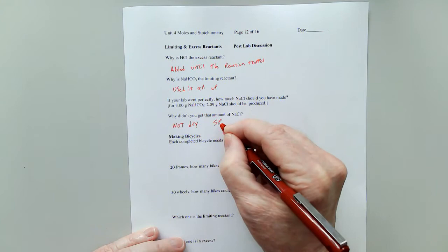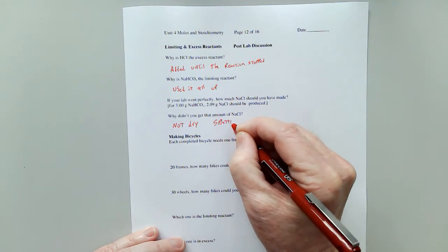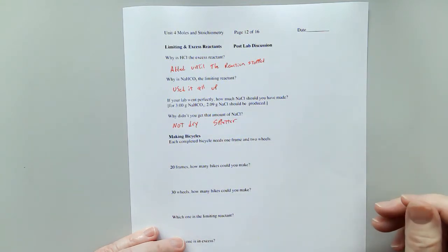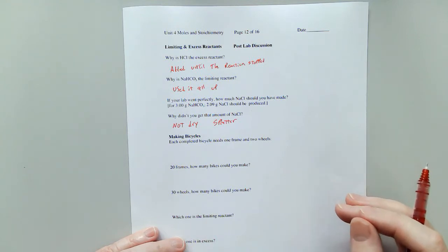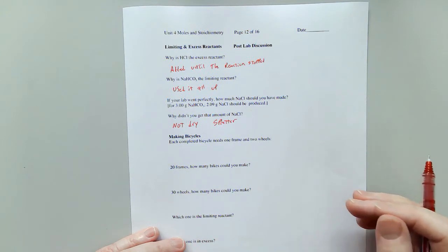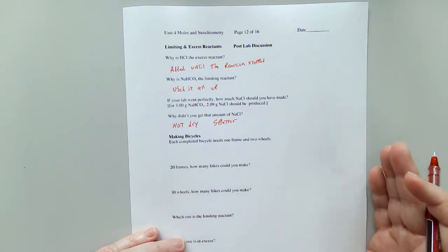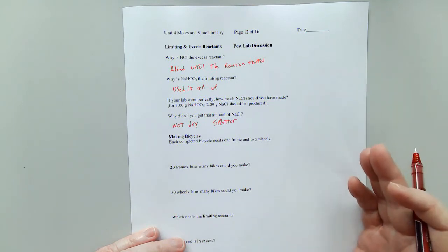You also had splatter. A lot of the sodium chloride would shoot up and collect on that watch glass that you covered the beaker with, and some of it falls off. So you really don't have any way to know for sure whether you have a higher than predicted yield, or a normal, or a less than predicted yield.